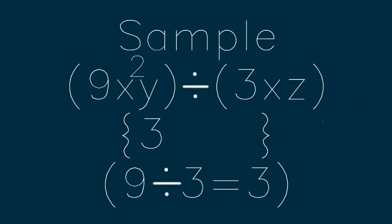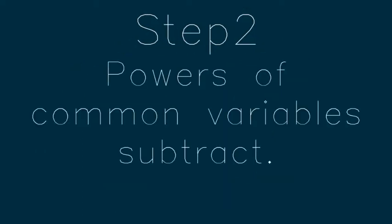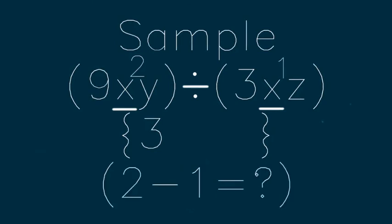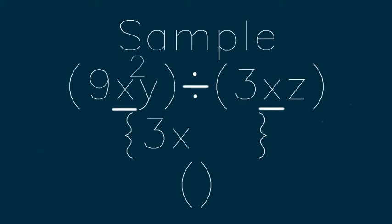Now the second step says that the powers of common variables subtract. First, because you're going to subtract the common variables' exponents, you have to find out what common variables are over here. You can see that x are common, so you subtract 2 with 1 to get 1. So you basically put x, which is raised to the power 1, over onto the answer side.